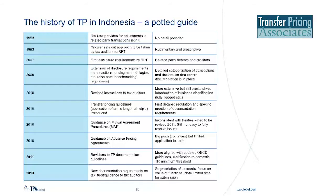The original guidance to tax auditors was very simplistic and lacked the depth needed to ensure proper analysis was carried out. It is important to grasp this as it has an influence on how tax auditors continue to approach transfer pricing matters. There was a hint of changes in 2007 with the need to disclose related party debtors and creditors, and then changes in 2009 marked a big push. This was the first time taxpayers were required to declare that documentation was in place to support the pricing of related party transactions. Revised guidelines to tax auditors provided some additional detail but could still be interpreted as setting out a choice of limited scenarios, and allowed auditors scope for arbitrary adjustments.